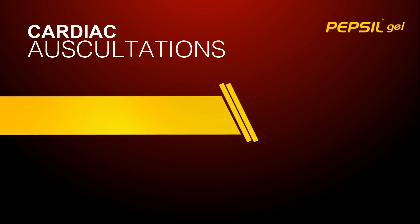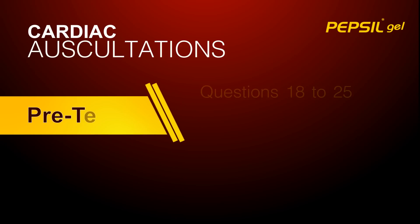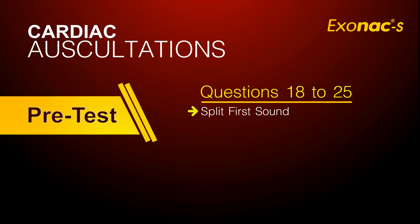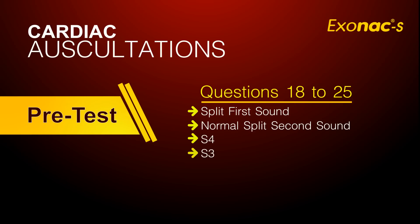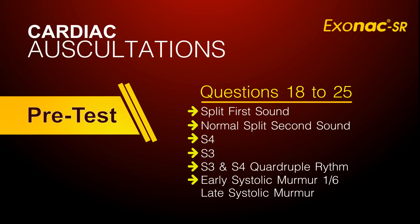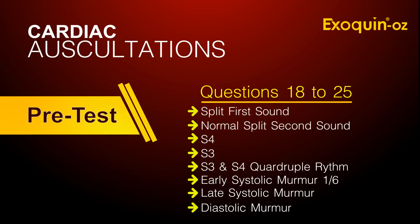Cardiac auscultation pretest. For questions 18 through 25, listen to each of the heart sounds and identify it from the following list: Split first sound. Normal split second sound. S4. S3. S3 and S4 quadruple rhythm. Early systolic murmur 1 over 6. Late systolic murmur. Diastolic murmur.